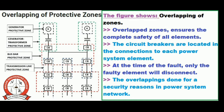Today I am going to explain about the protection zones in the power system. A protection zone is defined as the part of the power system which is protected by a certain protective scheme. It is established around each power system equipment. When a fault occurs on any of the protection zones, only the circuit breakers within that zone will be opened, so only the fault element will be isolated without disturbing the rest of the system.